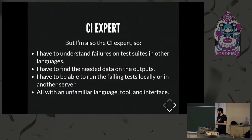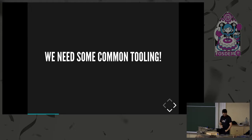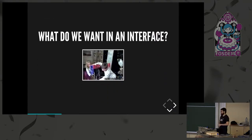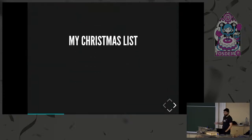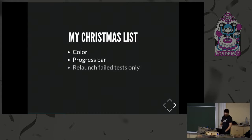I was unhappy about this situation, so I decided we need some common tooling. We're engineers — we love to write tooling — so let's write a tool that brings all of this information into a single interface. What do we want in an interface? My Christmas list: first, color, because when you have thousands of lines, colors definitely help. Then a progress bar, of course. And relaunching only failing tests, because if you have a build that takes three hours, you don't want to add another three hours just when you add a print.